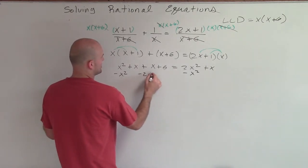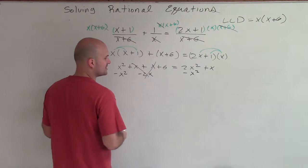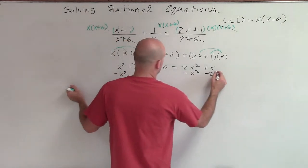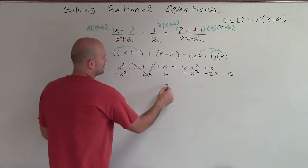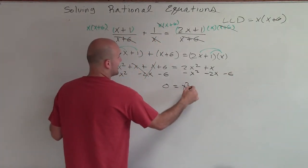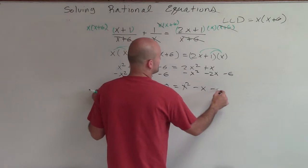So then I'll subtract 2x, which those will subtract out to 0. So I subtract 2x. And then I'll have to subtract a 6. So therefore, I'm left with 0 equals x squared minus x minus 6.